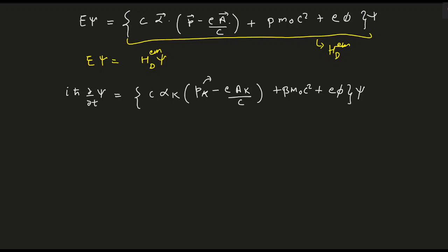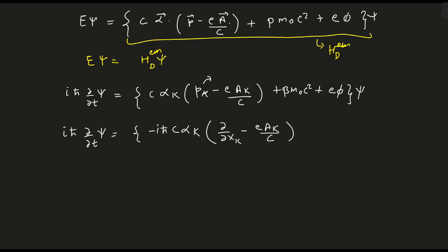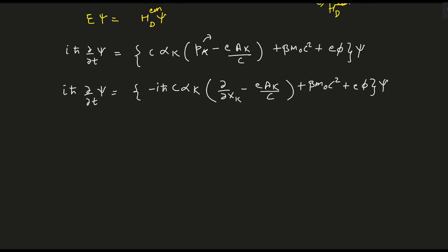Replacing p_k with its operator form minus i h-bar del/del x_k, we get: i h-bar del/del t psi equals minus h-bar c times alpha_k [del/del x_k minus eA_k/(h-bar c)] plus beta m_0 c squared plus e phi, acting on psi. Taking minus h-bar common leaves minus i h-bar c in the bracket.